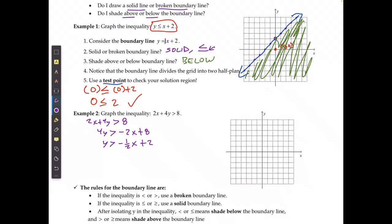I'll start at my y-intercept of 2, and with a slope of -½ I go down 1, right 2 repeatedly — or left 2, up 1 in the other direction. This is going to be a broken line because the inequality does not include the equal to sign. I connect these points with dashes to show it's a broken boundary line.